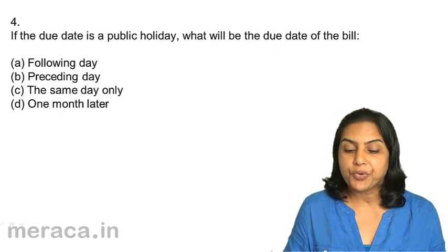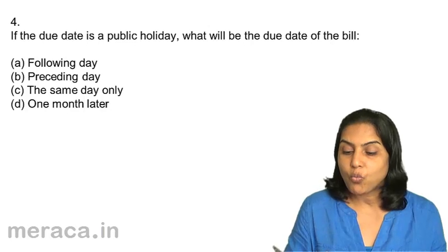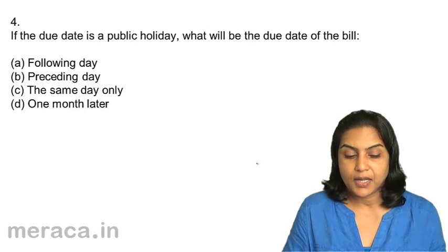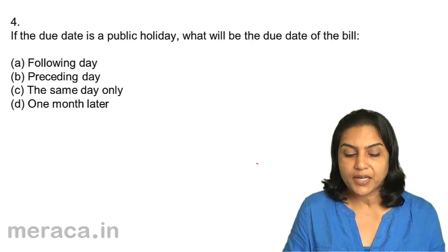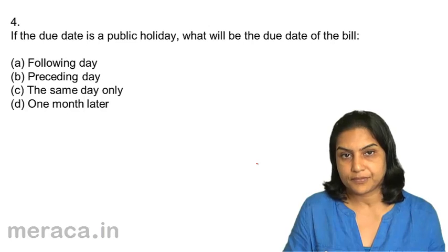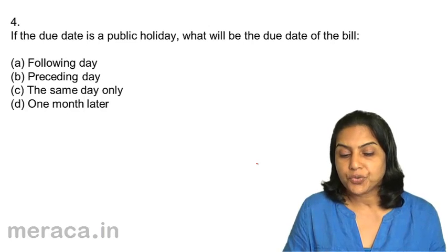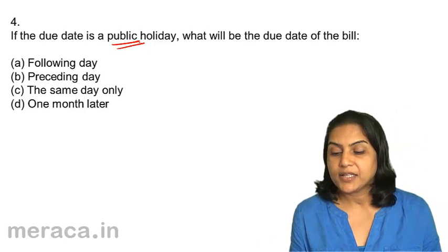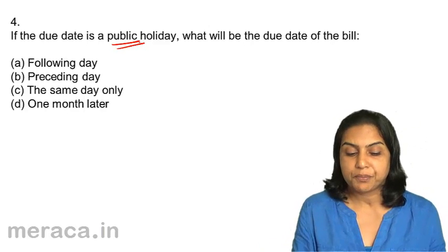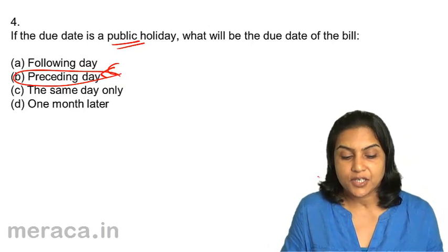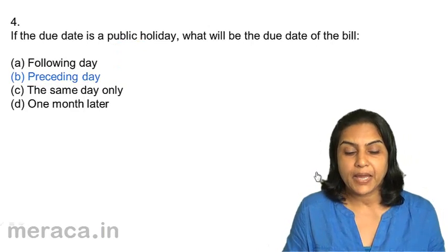Question 4: If due date is a public holiday, what will be the due date of the bill? A. Following day, B. Preceding day, C. Same day only, D. One month later. If the due date is a public holiday, the due date of the bill should be the preceding date. Correct answer: 4B.